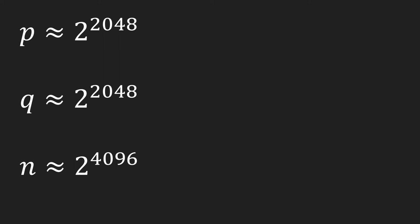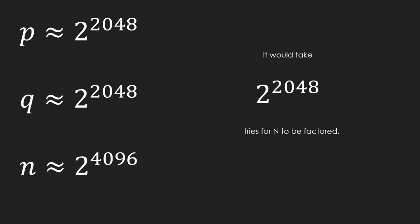p and q are around 600 digits long, which means n would usually be about 1,200 digits long. It would at least take 2 to the power of 2,048 tries for n to be factored into its two prime numbers. This makes RSA encryption very secure.